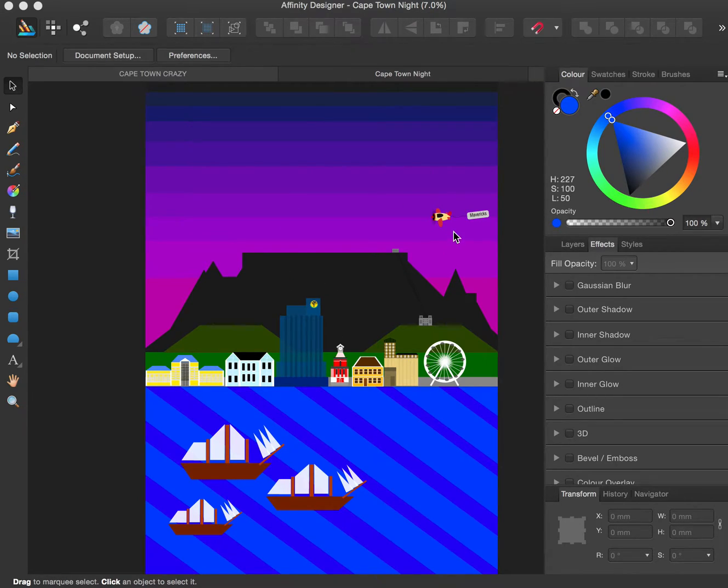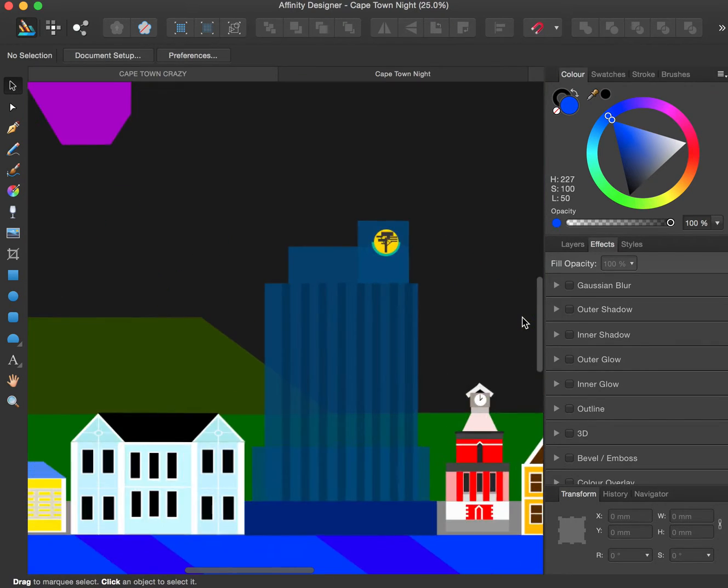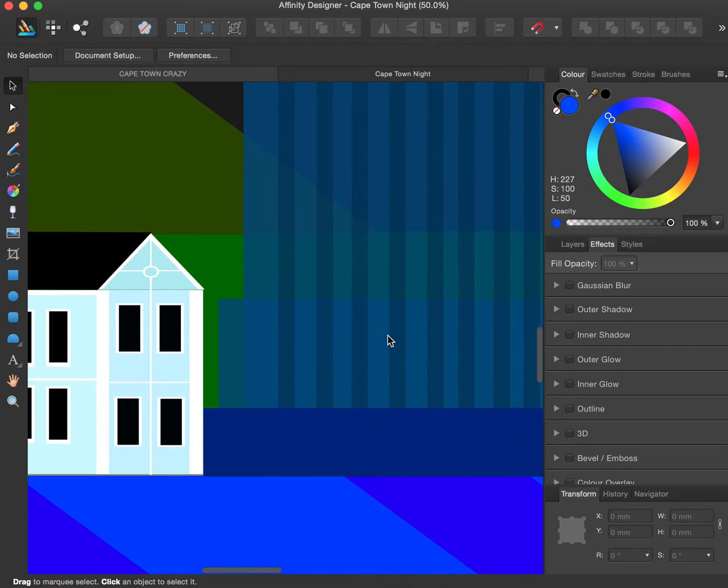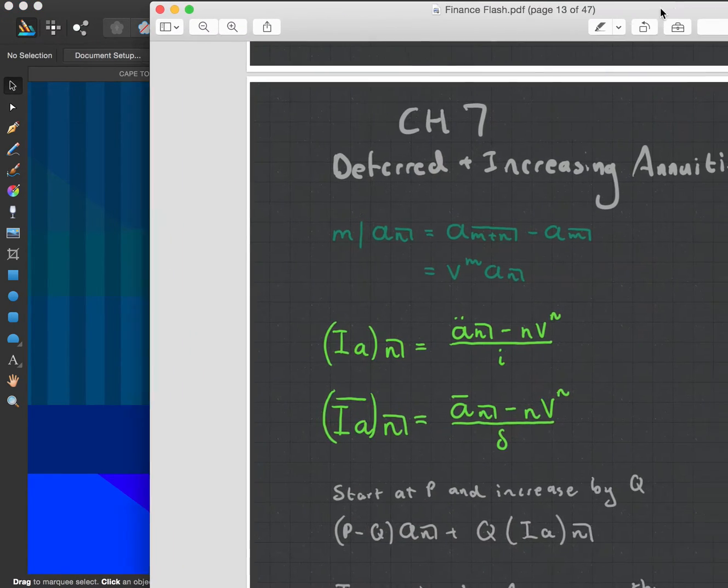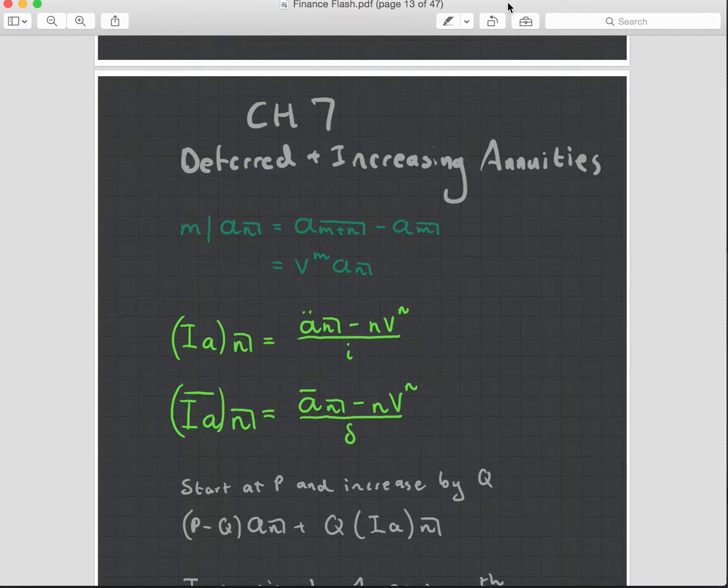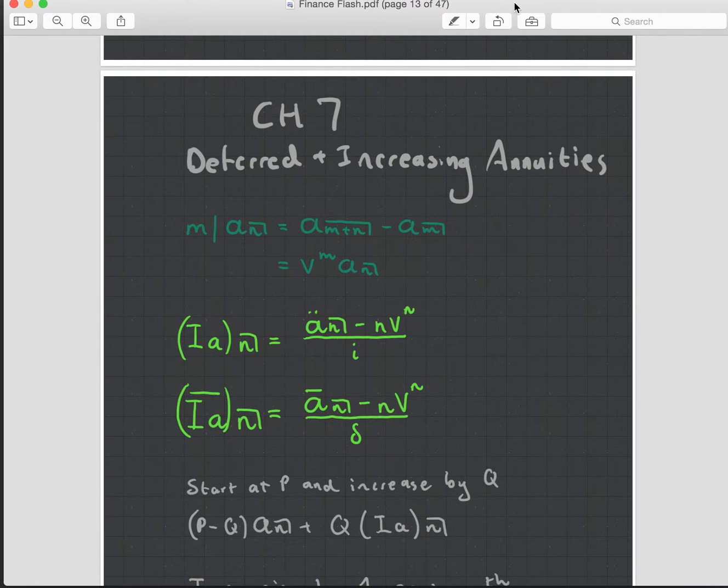As you can see, I've been making this pretty little picture here of Cape Town. You can zoom in, and I've been drawing little blocks and doing all that type of stuff. But let's jump straight into the chapter for today, which is Chapter 7, Deferred and Increasing Annuities.